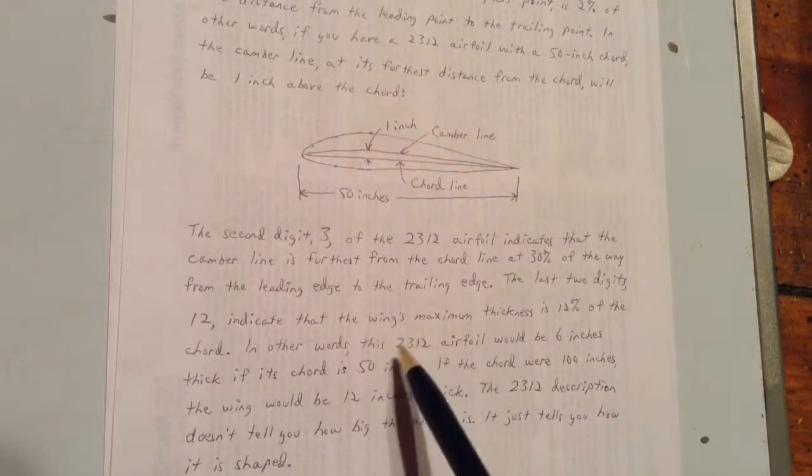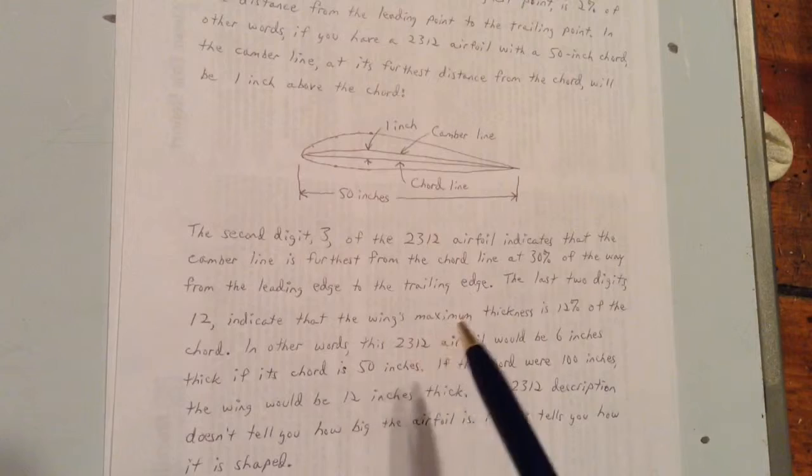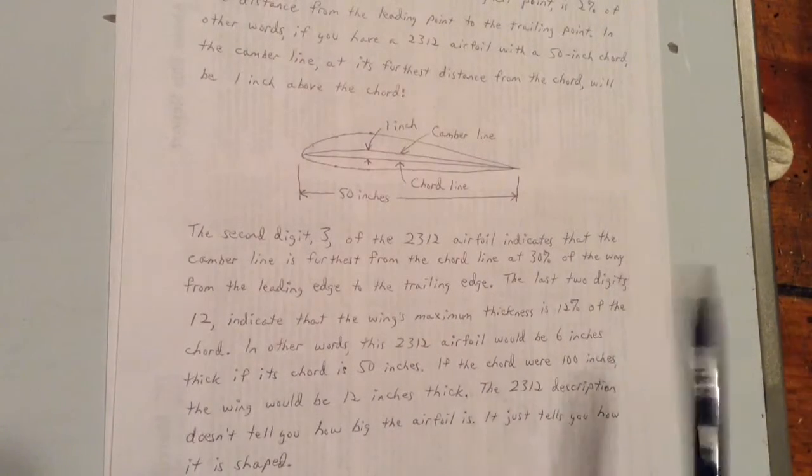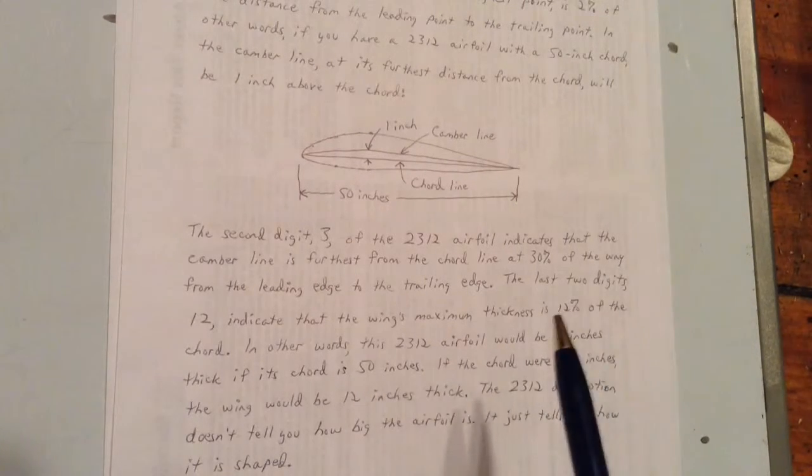Notice that the 2-3-1-2 designation doesn't tell you how big a wing is. It can be a wing on a jetliner or a little radio controlled airplane. It doesn't matter. All that 2-3-1-2 tells you is how it's shaped relatively.